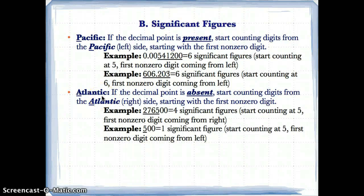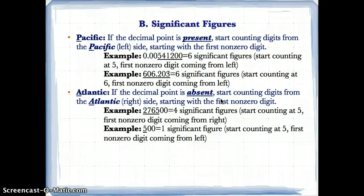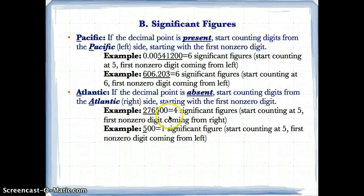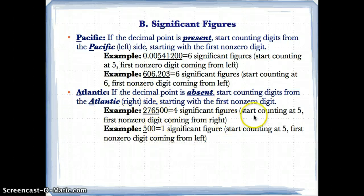Atlantic is the opposite case. A for Atlantic: if the decimal point is absent, you start counting digits from the Atlantic or right side, beginning with the first non-zero digit — going right to left instead of left to right. For example, with 27,650,000, the trailing zeros are ignored; starting from the right, the first non-zero digit is five, then six, seven, two — giving four significant figures.